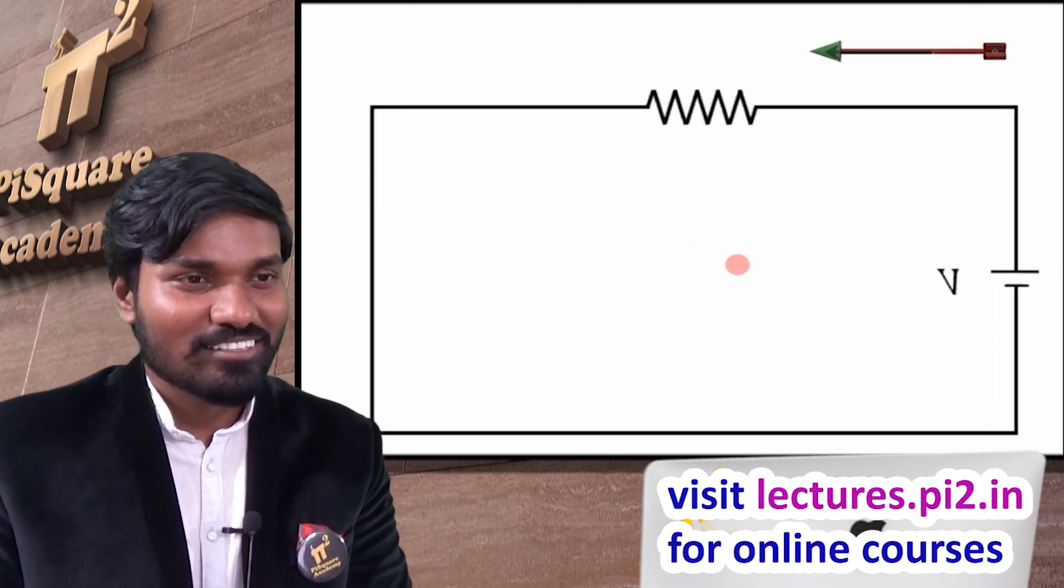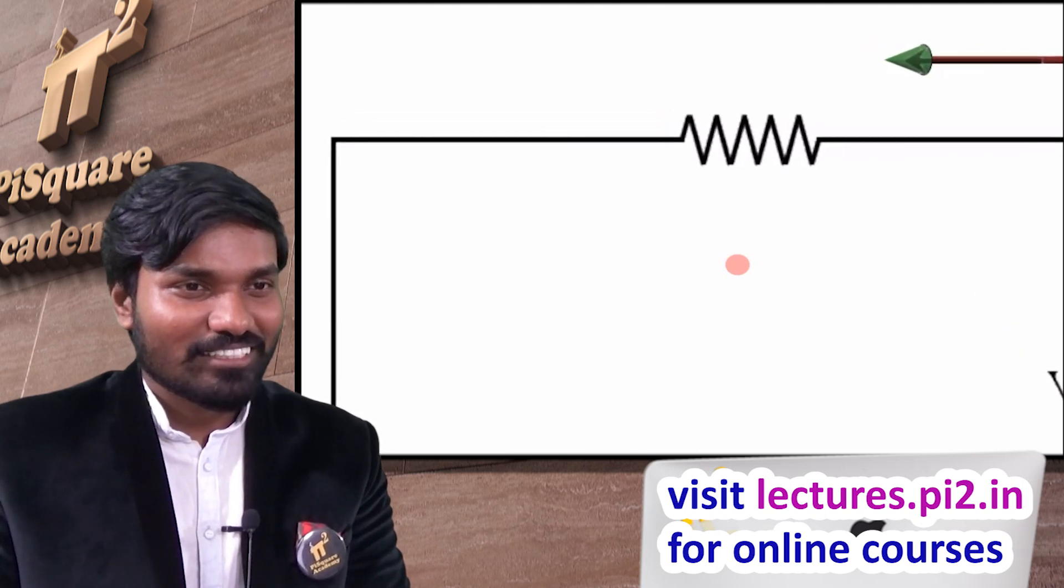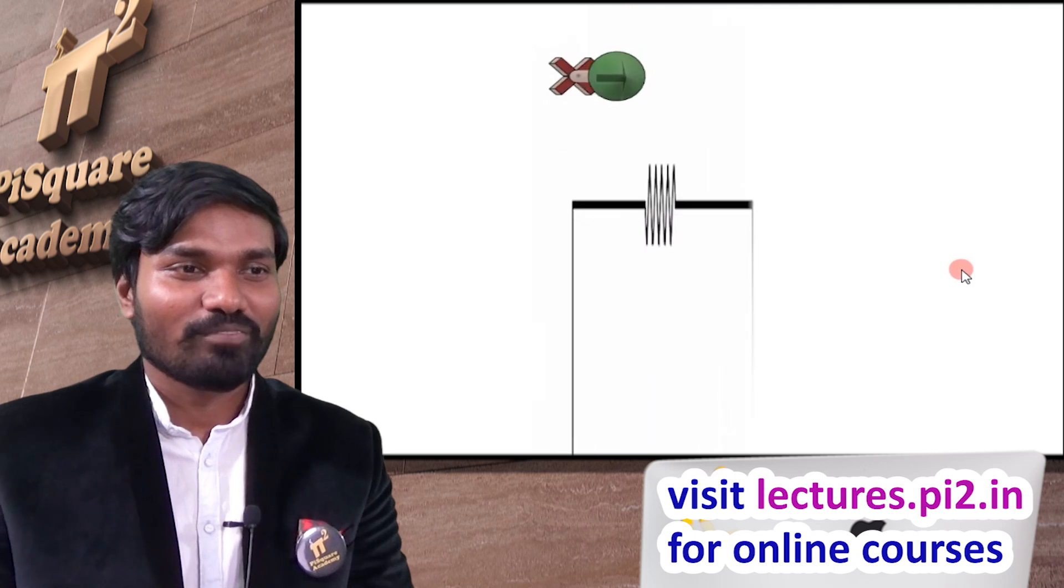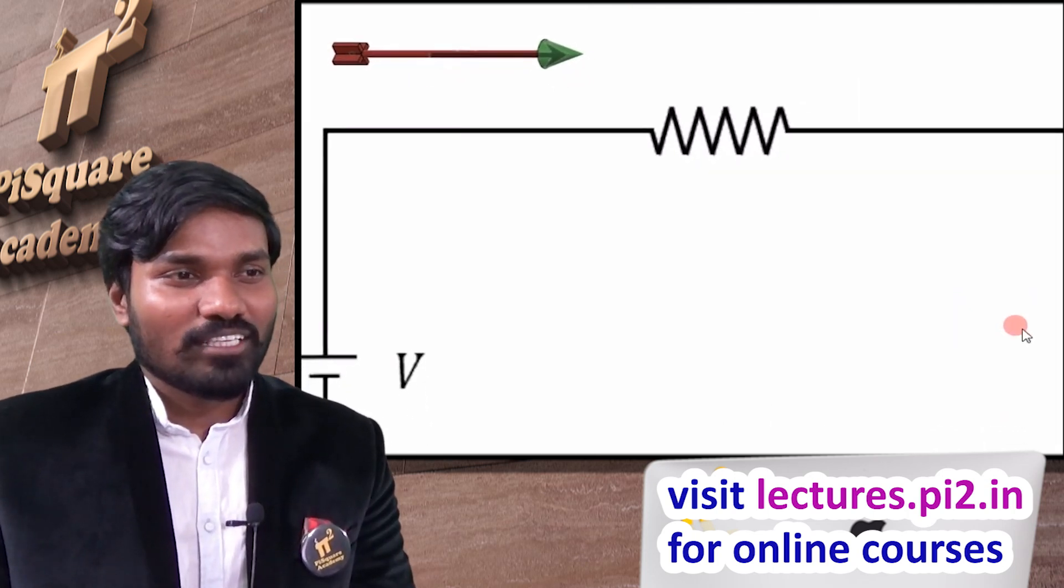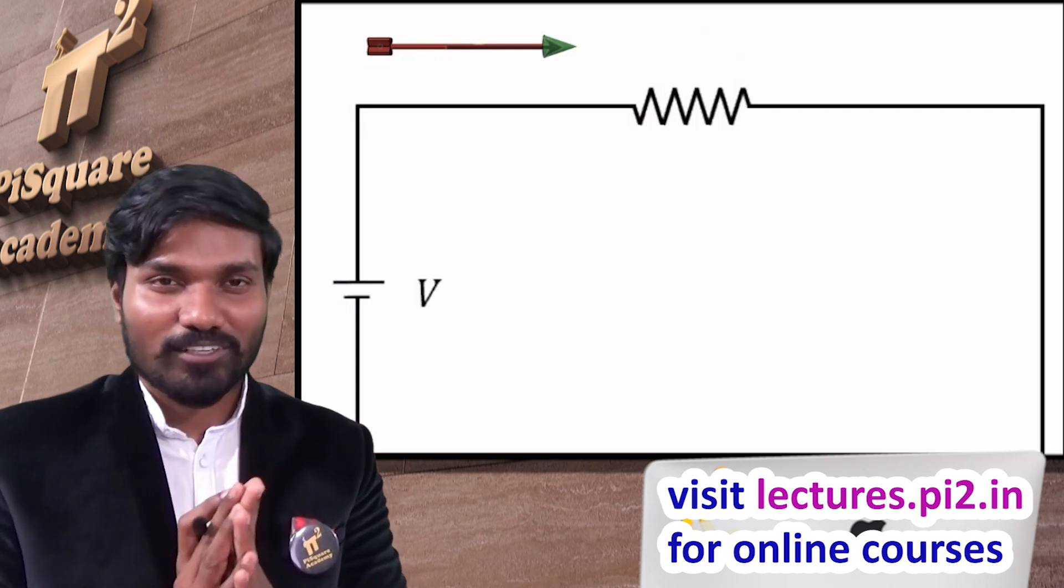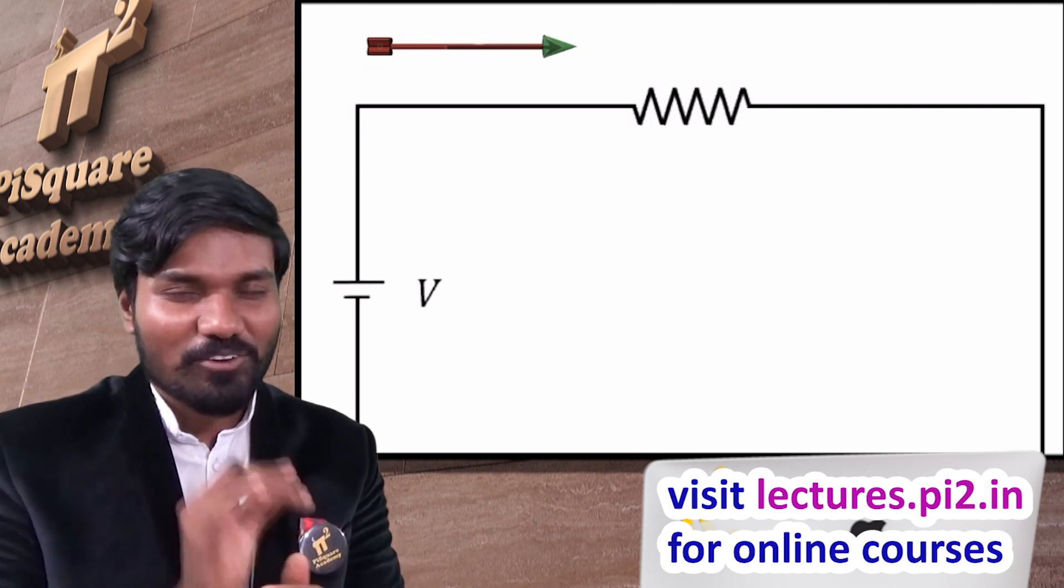See how simple is this? Let me just wait till another play. Yes. That is it. So I think now we understood why this is cross, why this is dot. Simple arrow convention. See how simple is this?